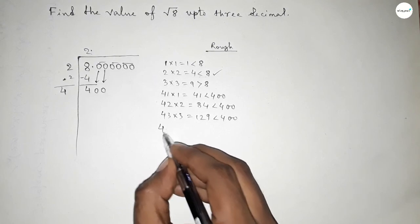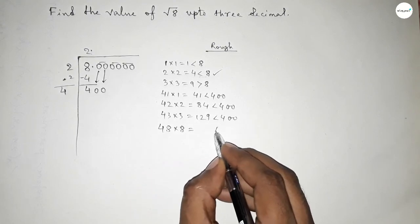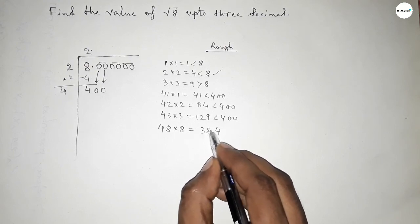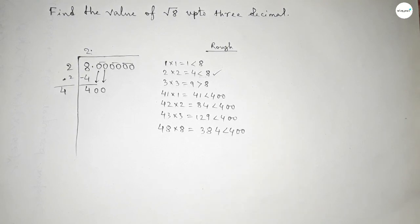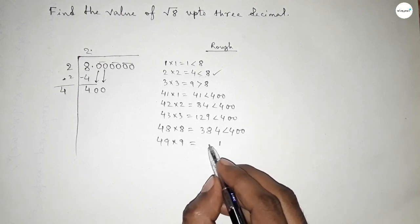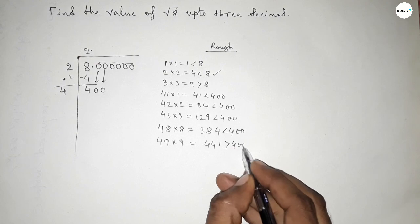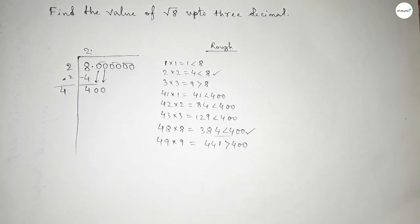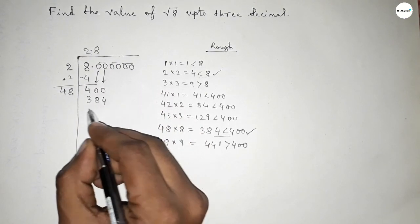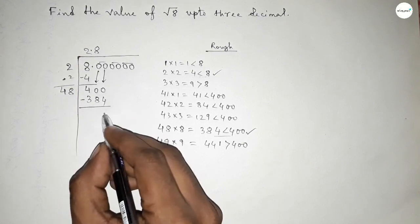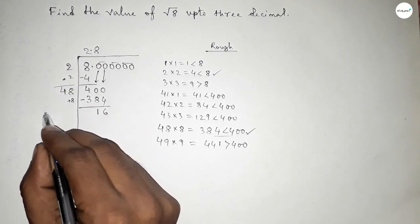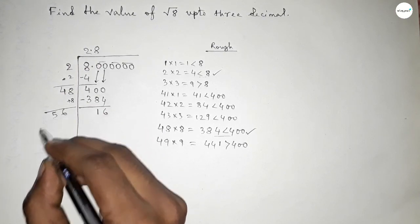Continuing: if we put 3, it is still less than 400. If we put 8, then 88×8=704... let me recalculate — 48×8=384, which is less than 400. If we put 9, then 49×9=441, which is greater than 400. So we take 8. Putting 8 here and writing the product 384. Subtracting: 400−384=16.